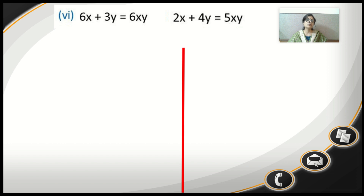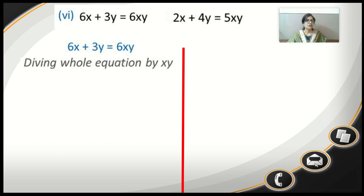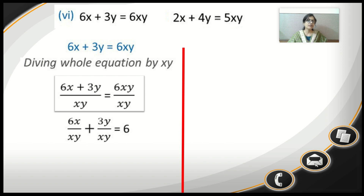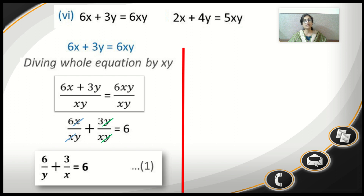Both equations are again not linear equations in two variables, so let's reduce them to linear equations first. For equation 1 — 6x plus 3y equals 6xy — we divide the whole equation by xy. So: 6x upon xy plus 3y upon xy equals 6. Cancelling x and y in each term, we are left with 6 upon y plus 3 upon x equals 6. We call this equation 1.